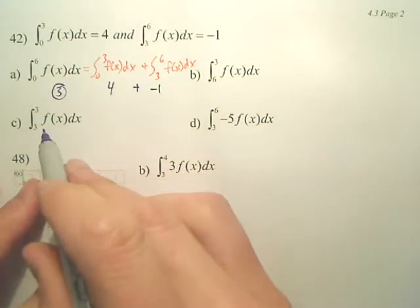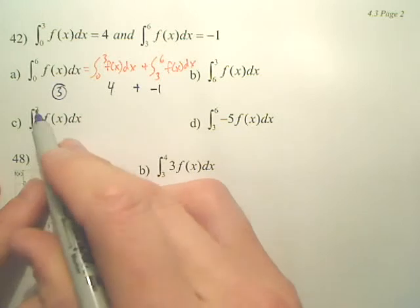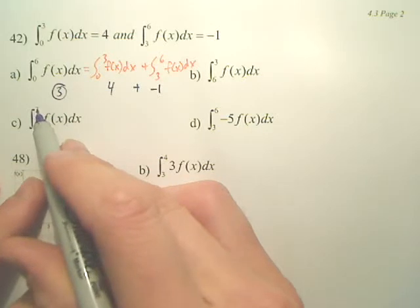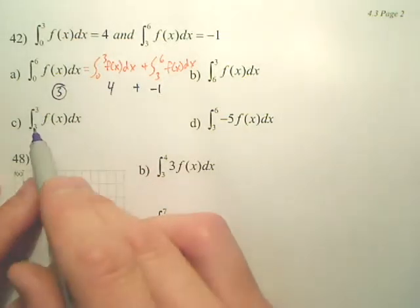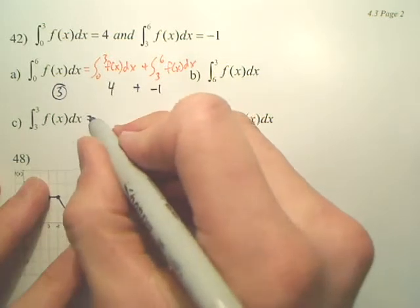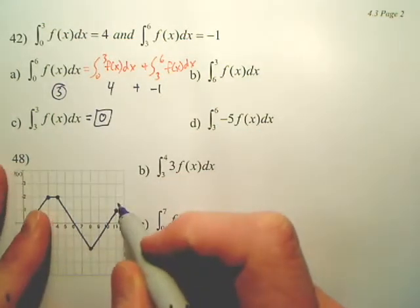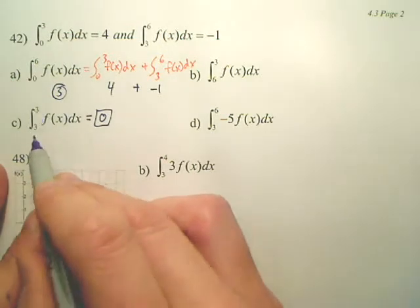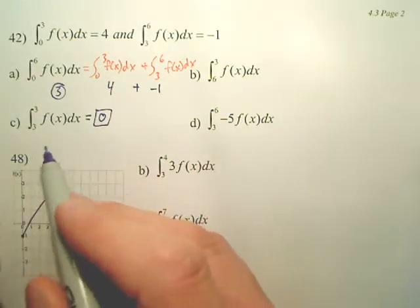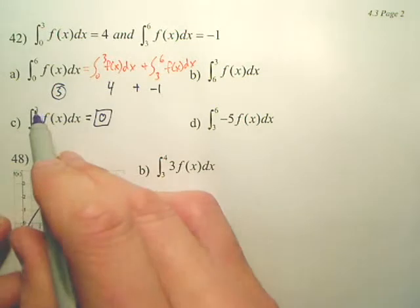Now, see? It's kind of dumb. You don't have to do anything because I'm going from 3 to 3. I move nowhere. Can you have area if you move nowhere, if there's no width? No. So there is no area to this, it's simply 0. That's an easy one. When there's no change or width, you can't do it. You're going from 3 to itself.